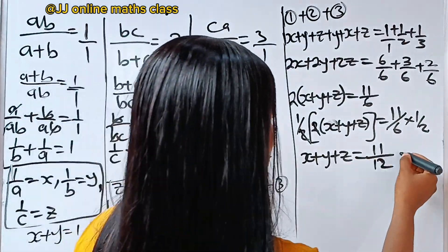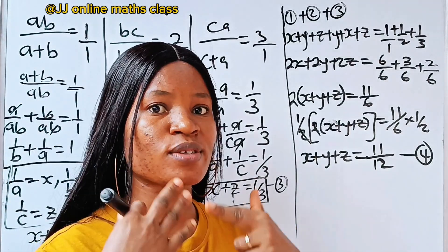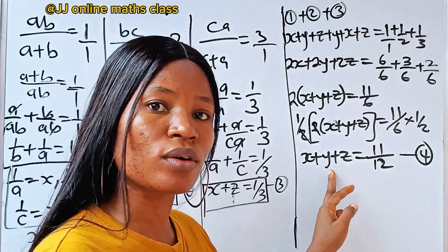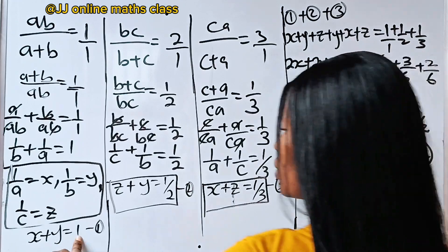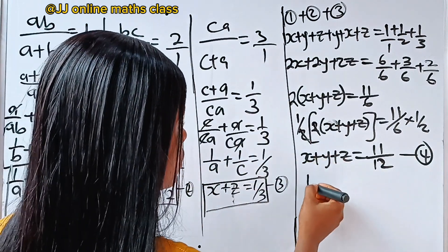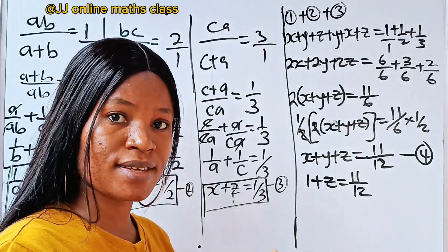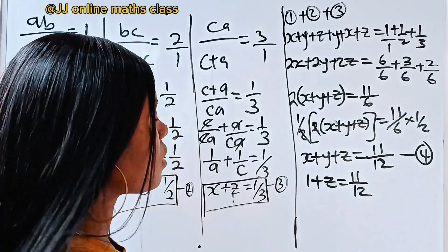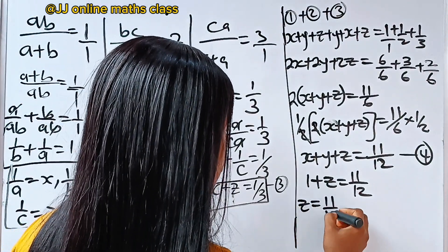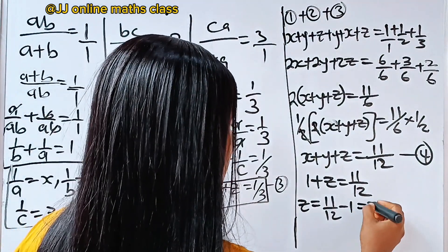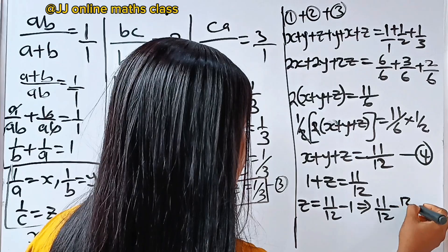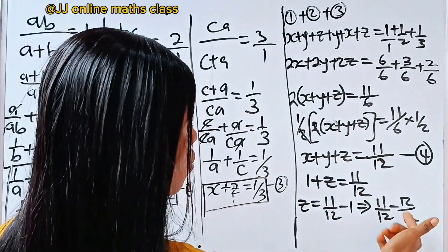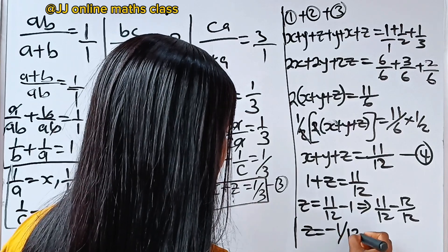Let's continue. Recall that x plus y is equal to 1, so substituting into equation 4, we write 1 plus z is equal to 11 over 12. To get z, z equals 11 over 12 minus 1, which is 11 over 12 minus 12 over 12, giving z equal to minus 1 over 12.